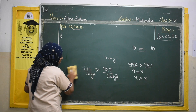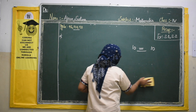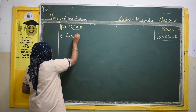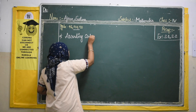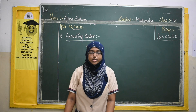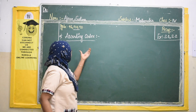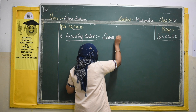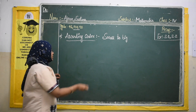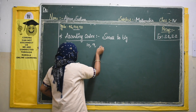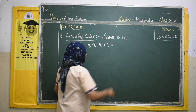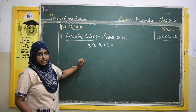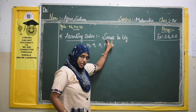Our next concept is ascending and descending order. Let us see what ascending order is first. If they give you a series of numbers, ascending order means writing them from small to big — from the smallest to the greatest number. Let us take a small example: the numbers 10, 9, 11, 15, and 4. We have to write these in ascending order.